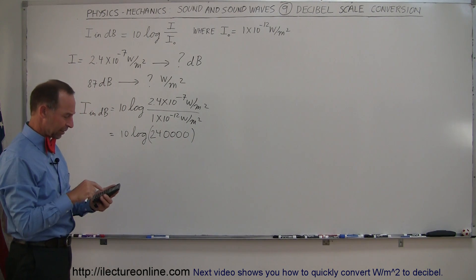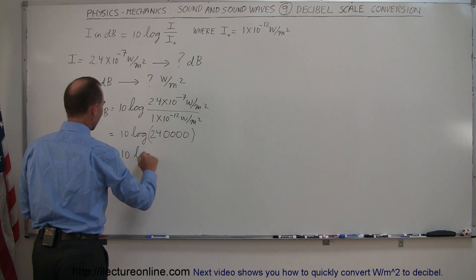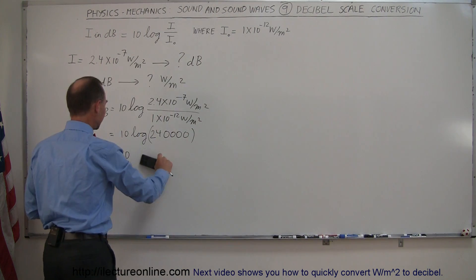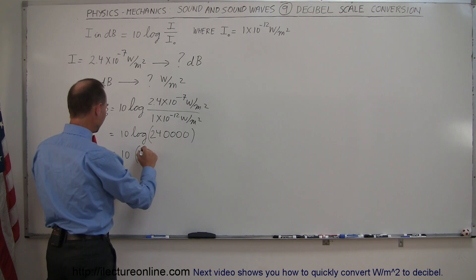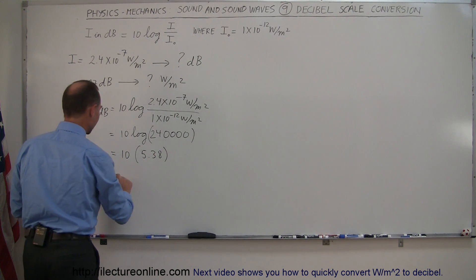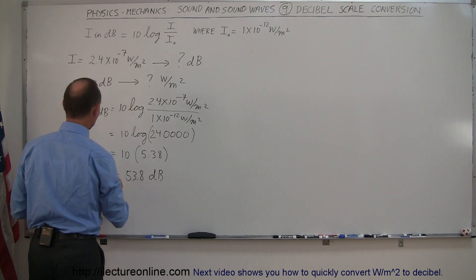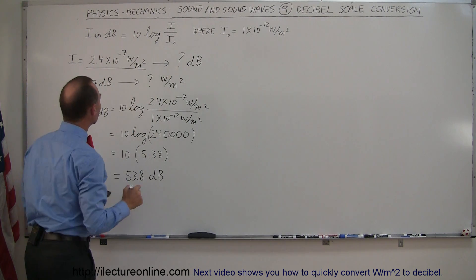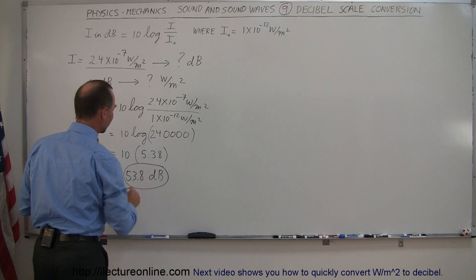There should be a log button on your calculator. So this is equal to 10 times the log of 240,000, which is 5.38. And of course, 10 times that is equal to 53.8. The units, of course, are now decibels.